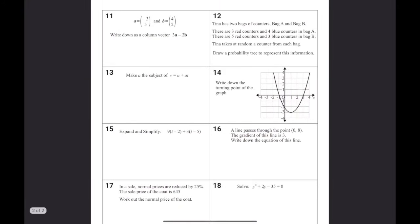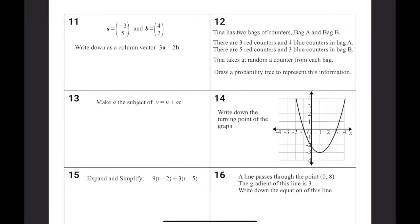That is the first 10 questions. On to the back 10. Write down as a column vector 3A minus 2B. So 3 lots of A is going to be minus 9, 15, because we're multiplying that by 3. Minus 2 lots of B is going to be 8, 4. Taking these away from each other, minus 17, 11.